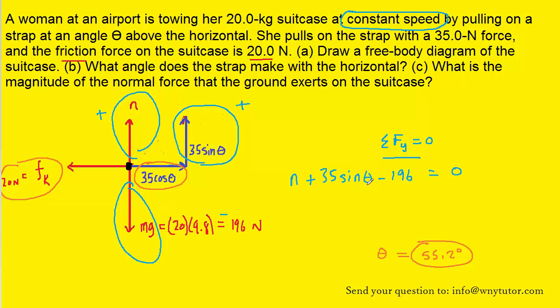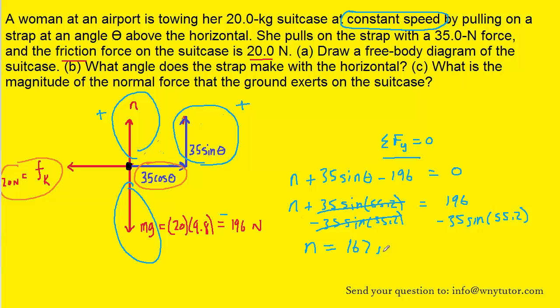Now, this equation contains theta. We already found theta to be 55.2 degrees. So we can substitute that in. We can add the 196 over to the other side. And then subtract 35 sine of 55.2 from both sides of the equation. That will cancel them on the left side. And so we're going to have the normal force equaling approximately 167 newtons.